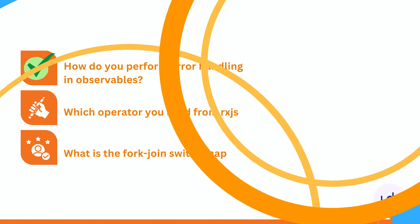Suppose you have an observable — how can we handle errors for observables? With catchError — the observable has a catchError operator where we can catch errors. In a promise, we have then and catch. In an observable, we have the error method as well.